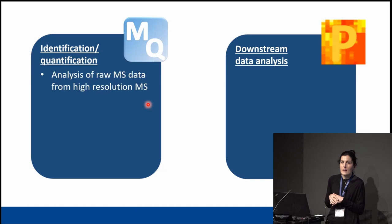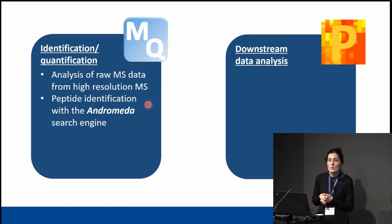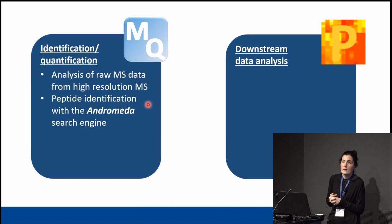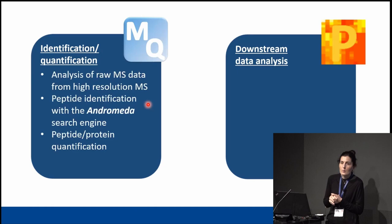What MaxQuant will do is identify the peptides by using a specific search engine developed in the lab called Andromeda. So first, identification of the peptides, and then it will also do quantification at different levels: peptide level, protein level, and PTM level.